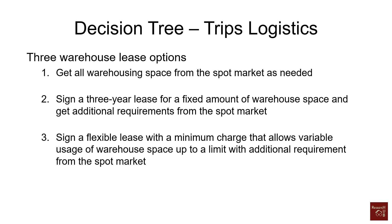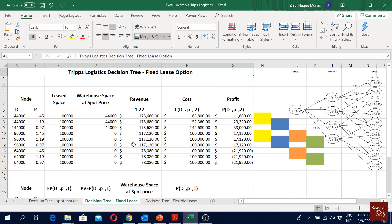In this trips logistics example, we are trying to see how to go for a warehouse lease option using decision trees. In the previous video we looked at the first option where we only considered the spot market, but in this video we are going to look into the second option where we consider a three-year lease for a fixed amount of warehouse space and additional requirement from the spot market. All other values and prices will remain the same as in the previous case, so if you haven't seen the previous video, please have a look at it first.